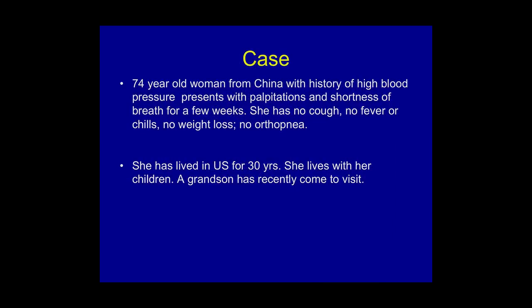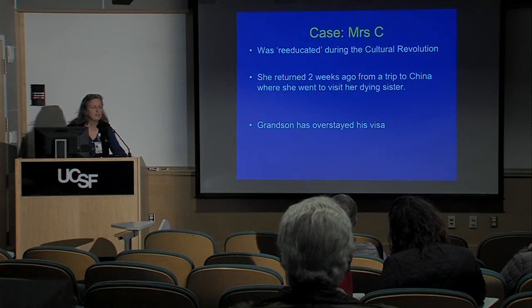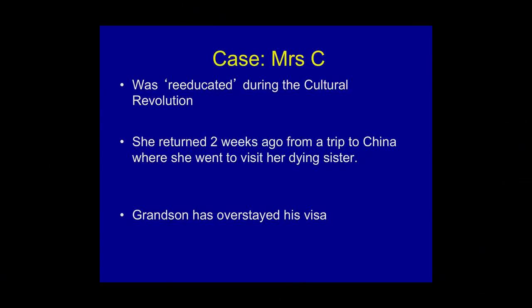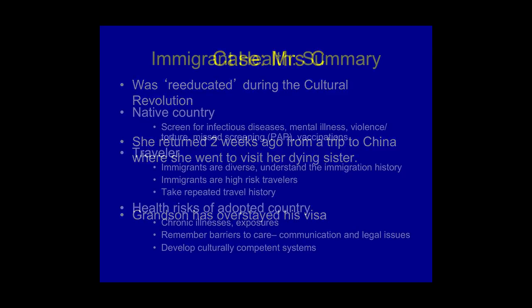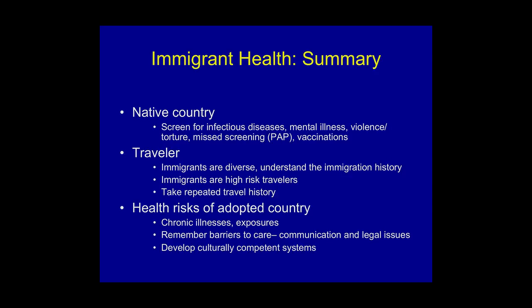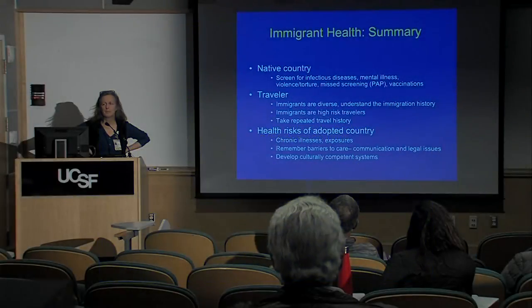Let's go back to Mrs. Chen — a 74-year-old woman from China with a history of high blood pressure coming in with shortness of breath. We found out she has been in the US for 30 years and lives with her children. She has a grandson who recently came to visit. She was re-educated during the Cultural Revolution, she just returned two weeks ago from a trip to China to visit her dying sister, and her grandson has overstayed his visa.